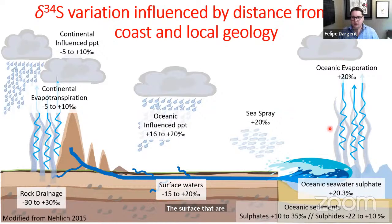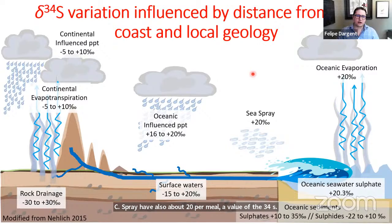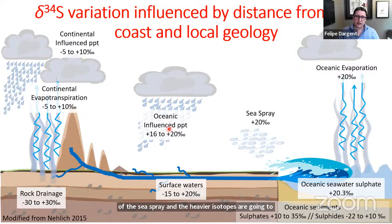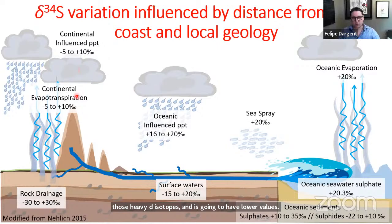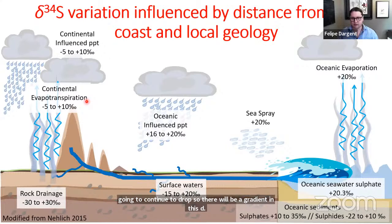When seawater sulfates evaporate, those sulfates — or sea spray moving inland — also have a δ34S value of about 20 per mil. But as they are carried inland, those high values start to be depleted. For example, during rain or deposition of sea spray, the heavier isotopes fall first, which means the gas carrying them becomes depleted in heavy isotopes and has lower δ34S values as you move inland.